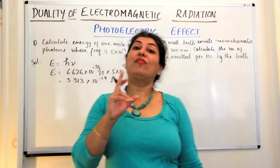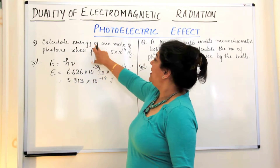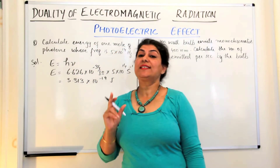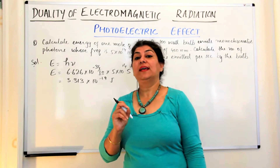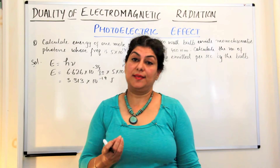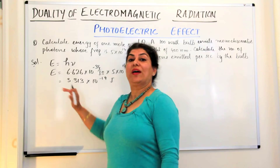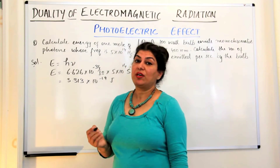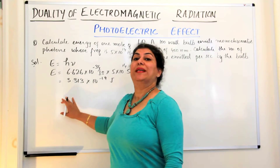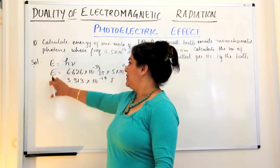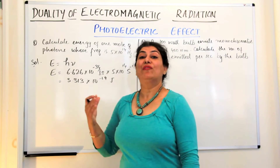But this is the energy of one photon and the question asks us what is the energy of one mole. We know just like a dozen has 12 in it, one mole of anything has Avogadro's number of particles in it. One mole of photons would be equal to Avogadro's number, which is 6.022 into 10 to the power 23 photons.